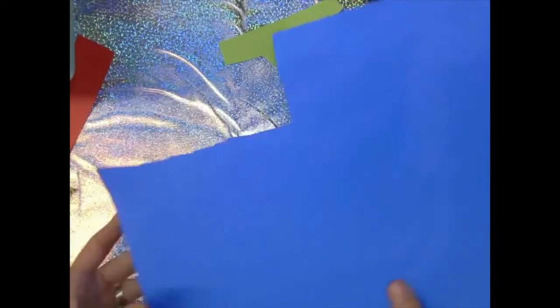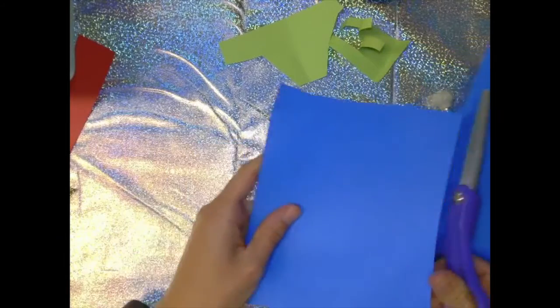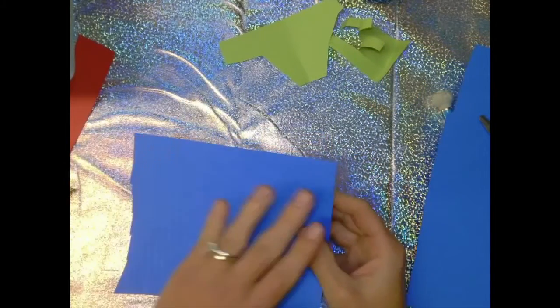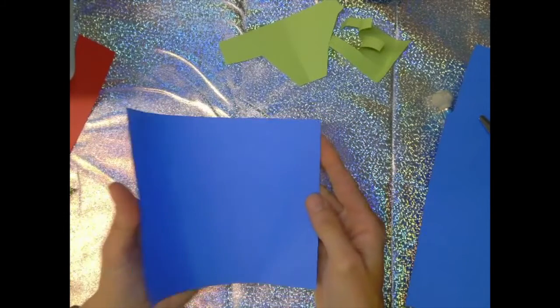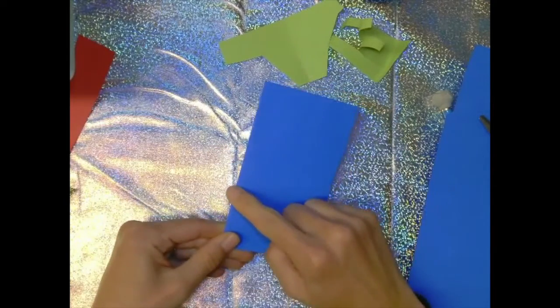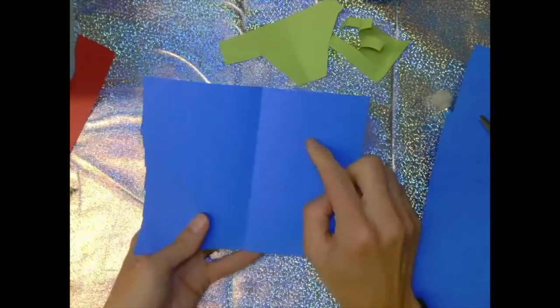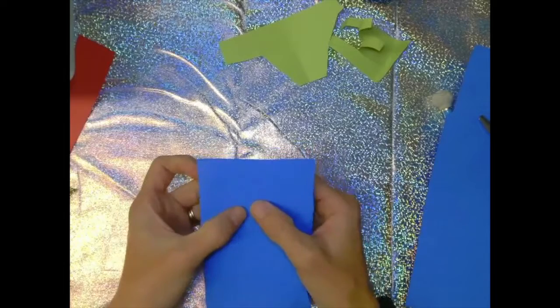If you want to make something like a mask where you have two eye holes and you want them to be symmetrical, which means the same distance from the middle mirrored, you can fold your paper in half first. Now anything I cut out of this fold is going to be in the middle of my paper. But if I want those two eye holes to be sort of a little ways off, I'm going to figure out where I want my eye.